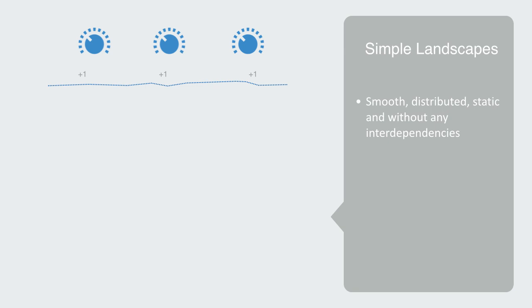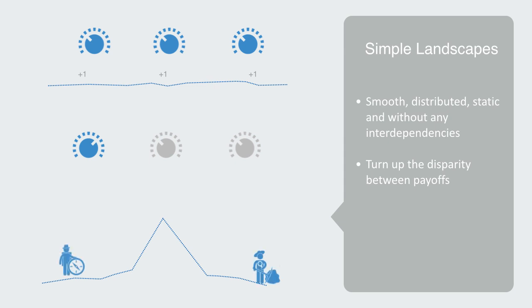Now, let's turn up the disparity between payoffs, so that there is at least one optimal solution that is far superior to others. One big mountain in the middle of the landscape. Now, all agents need is a simple algorithm that tells them to stay going upwards until they come to a peak, and then stay there, as they have now found the global optimal solution. This is called a greedy algorithm, and it works well in these very simple environments.